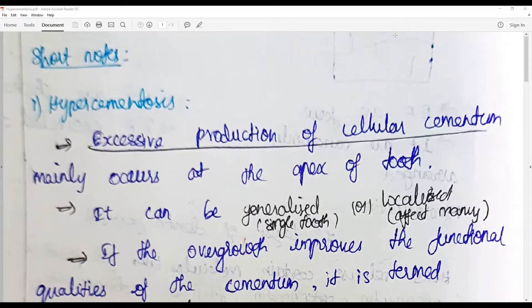Hypercementosis merely says or means that there is excessive production of cementum. Mainly it is of cellular cementum in type and more common in the apex of the tooth clinically.